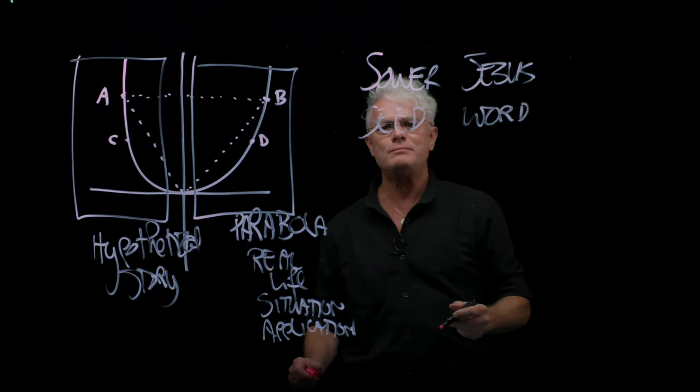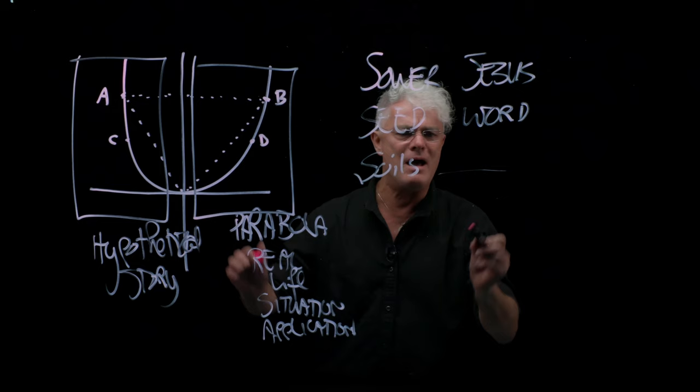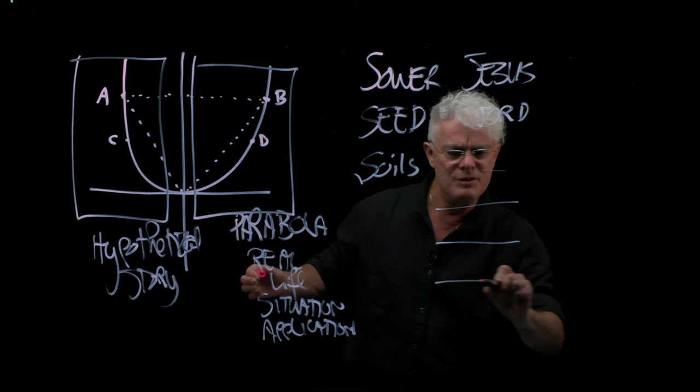Well, I'm not going to ruin the story and give you a spoiler for it. This is as far as you get today, but each of the soils, the pathway, the hard path, the rocky soil, the weedy soil with the thistles, and then the good soil that grows things. So each of those particular soils has a significance.